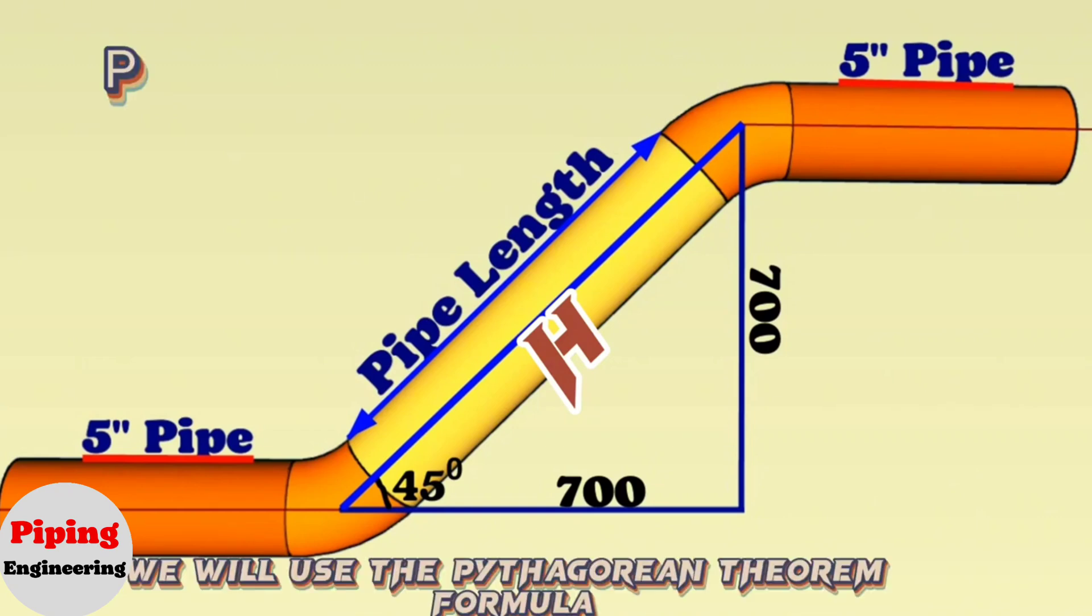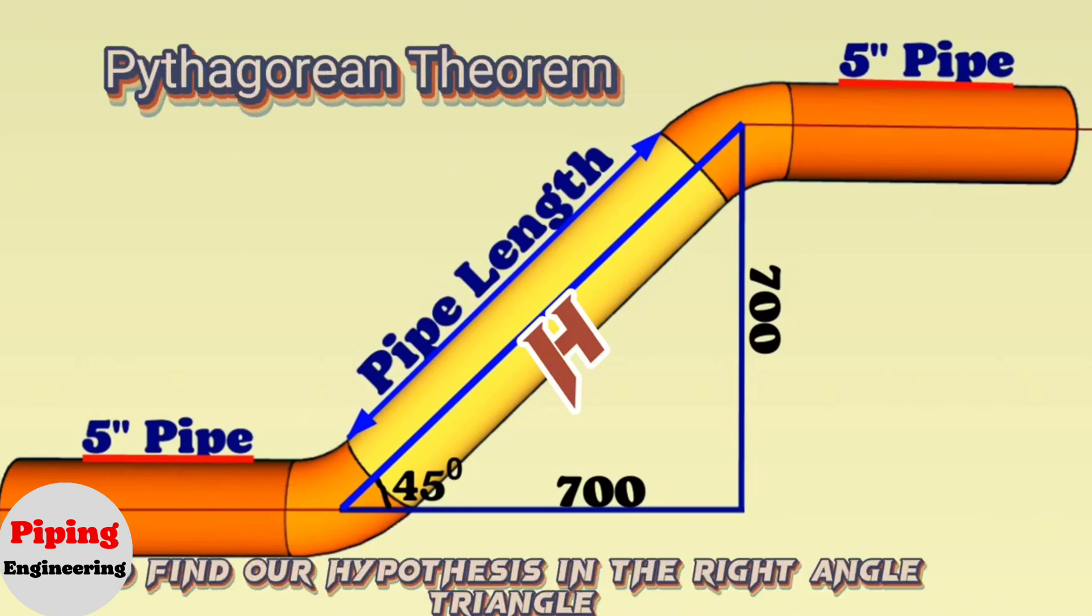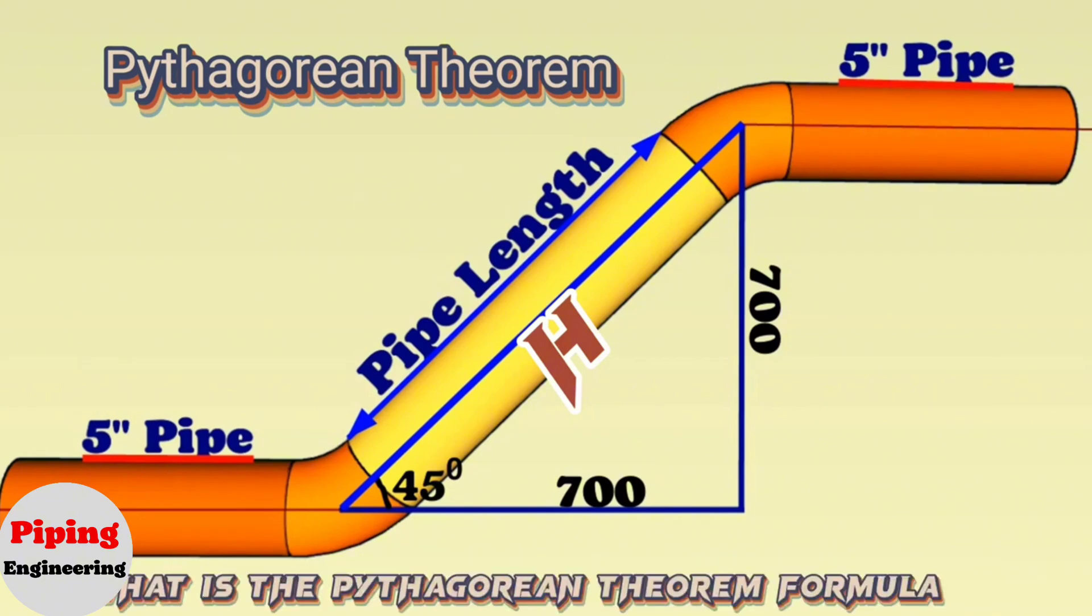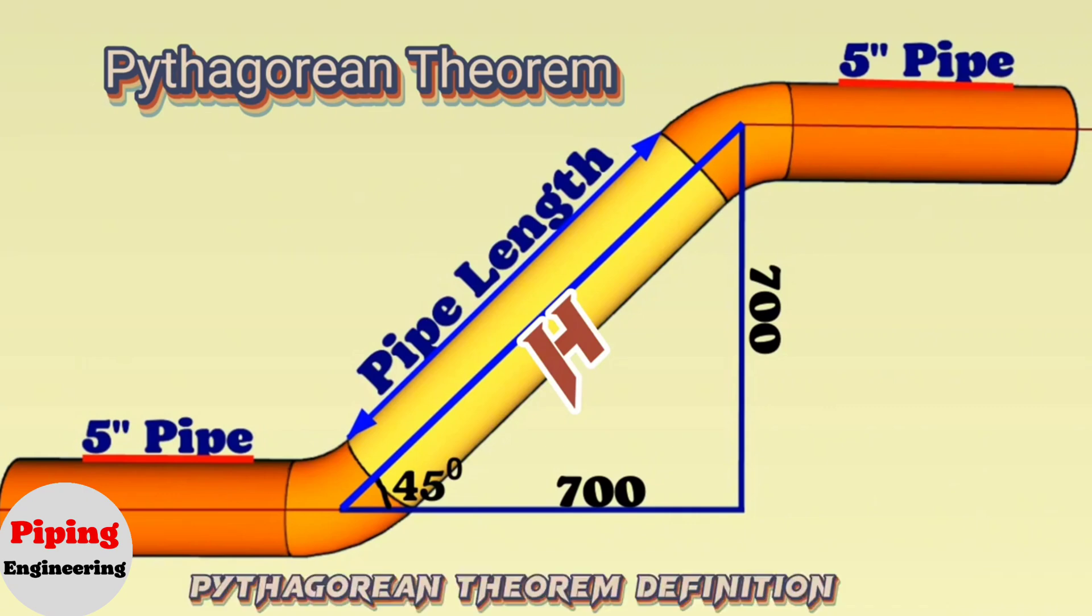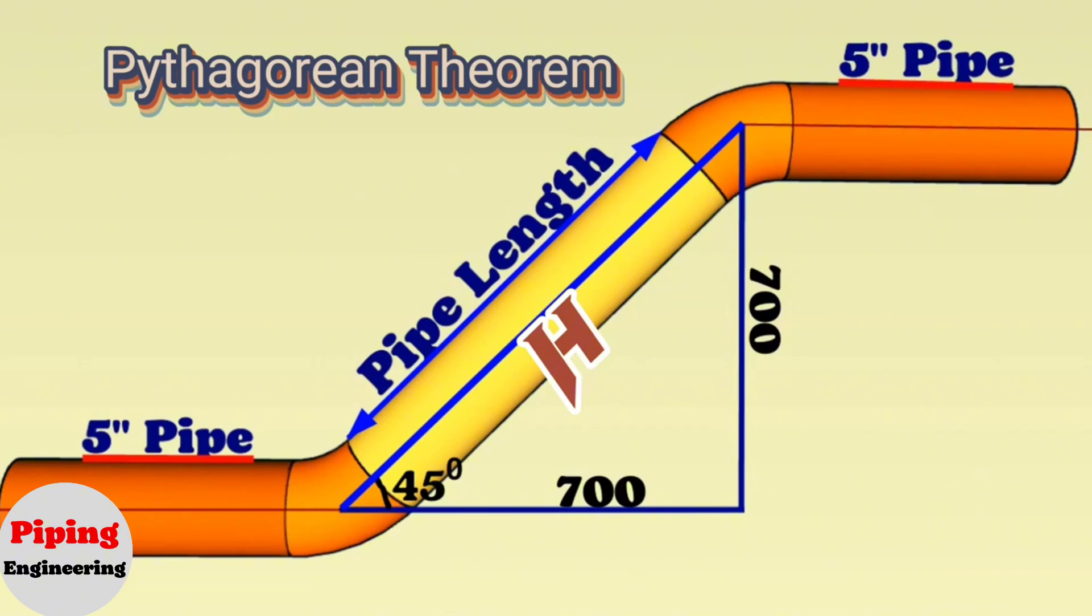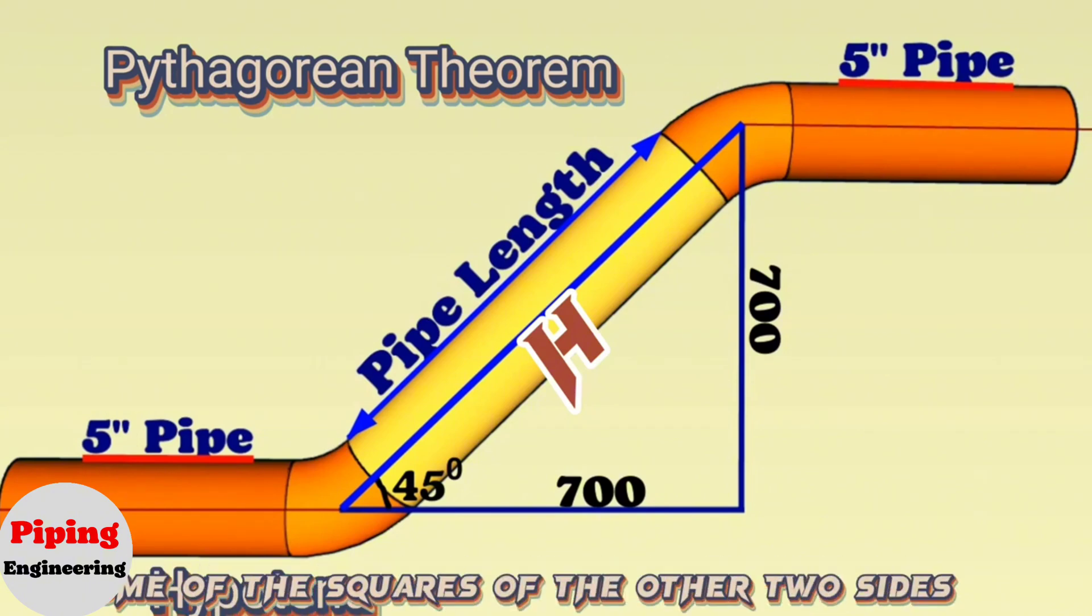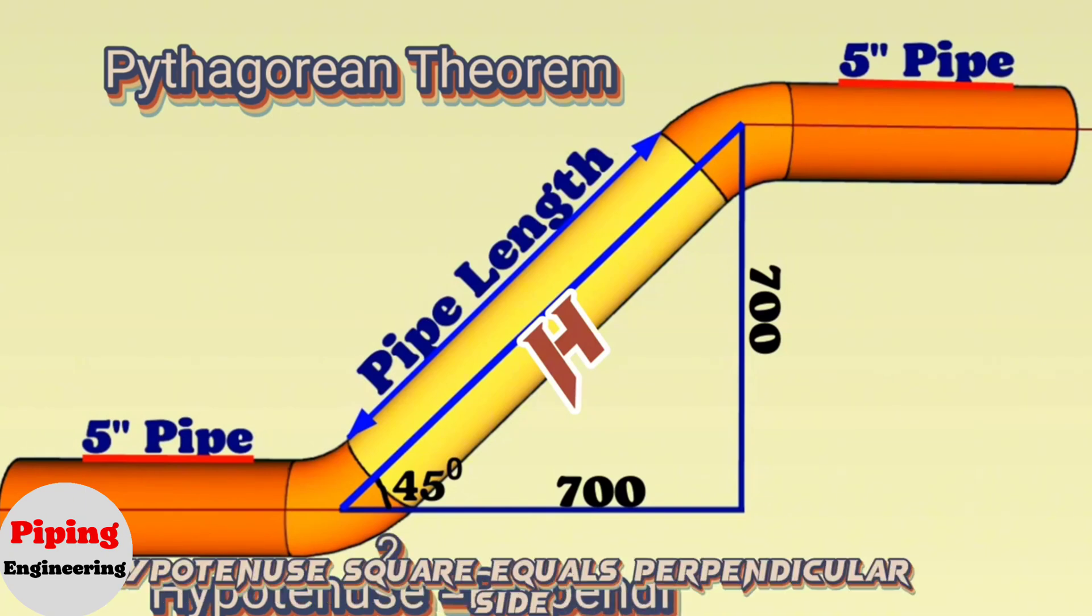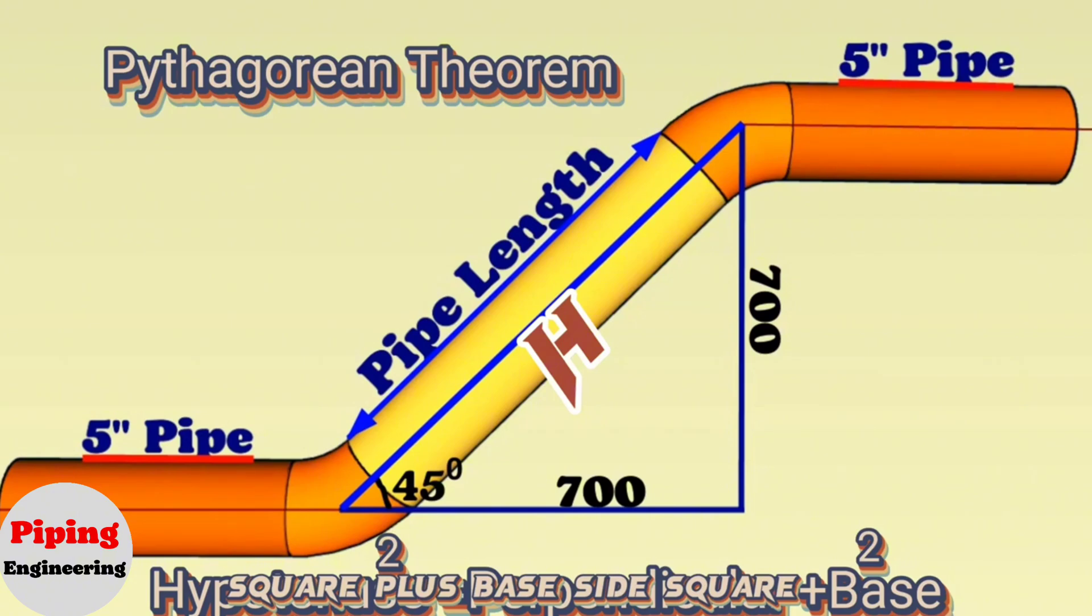We will use the Pythagorean theorem formula to find our hypotenuse in the right-angle triangle. What is the Pythagorean theorem formula? Pythagorean theorem definition shows the relationship between the three sides of a right-angle triangle. The square of the hypotenuse is equal to the sum of the squares of the other two sides. Hypotenuse square equals perpendicular side square plus base side square.